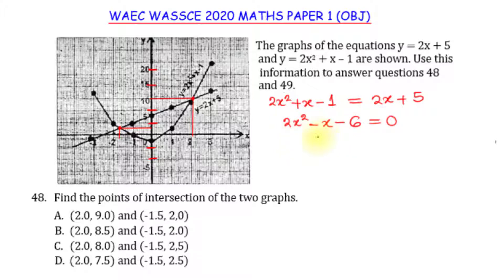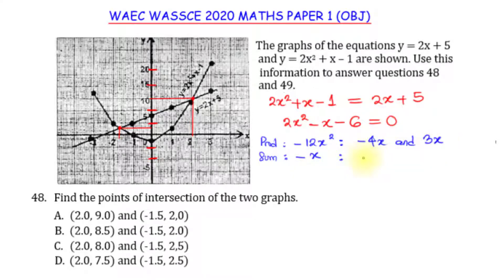Using the product-sum method: the product is 2 × (-6) = -12x², and the sum must equal -x. I need two numbers that multiply to -12x² and add to -x. I can use -4x and 3x, because (-4) × 3 = -12 and -4x + 3x = -x. So I rewrite the equation as 2x² - 4x + 3x - 6 = 0.